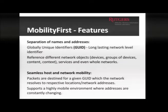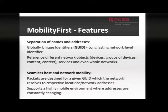GUIDs are long-lasting network-level identifiers — no matter where a device moves, its GUID remains constant. Any object in the network, whether a mobile device, router, or piece of content, is identified by a GUID. Additionally, GUIDs can refer to groups of objects based on context: a group in a particular location or a set of servers providing a specific service can share a GUID, enabling multicast and anycast groups.